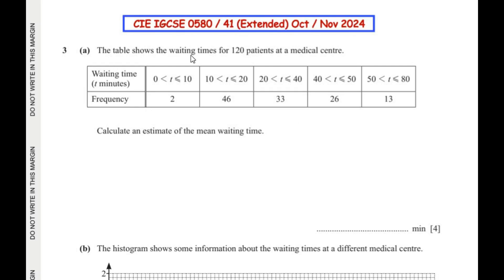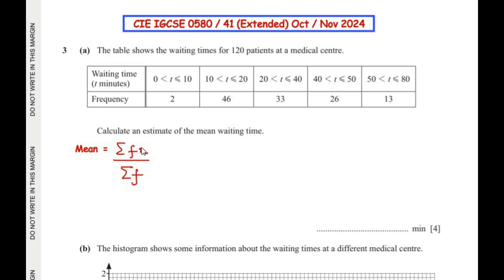The table shows the waiting times for 120 patients at a medical center. We need to calculate an estimate of the mean waiting time. The frequency represents the number of patients, and the class intervals represent the waiting times. The formula for the mean is the sum of fx over the sum of total frequency. We take the midpoint of each class interval, multiply by frequency, sum them up, then divide by the total frequency of 120.